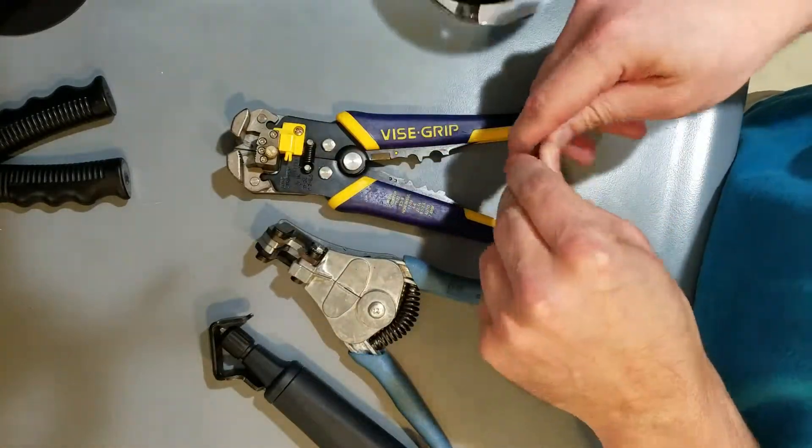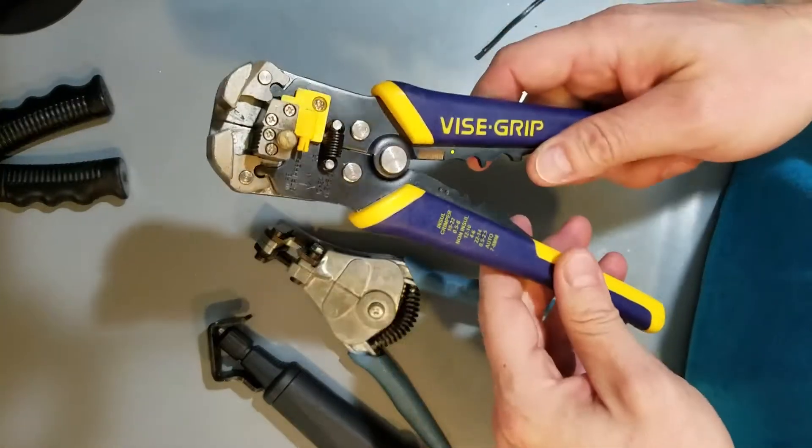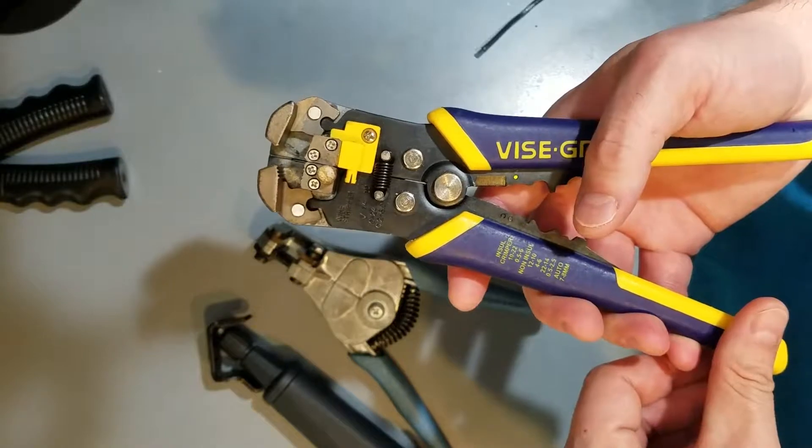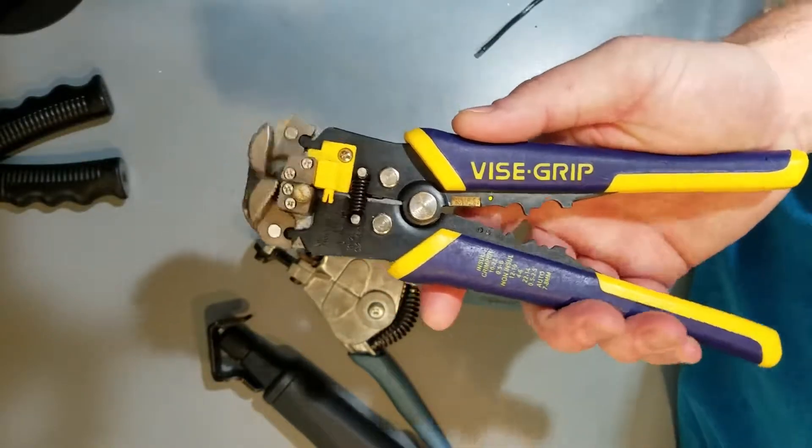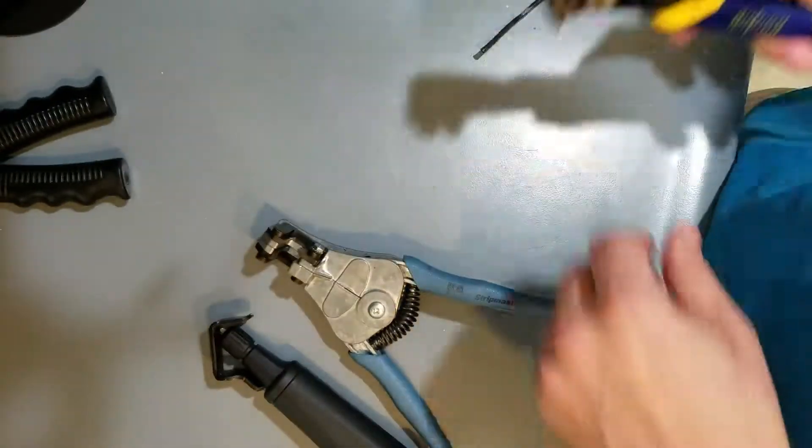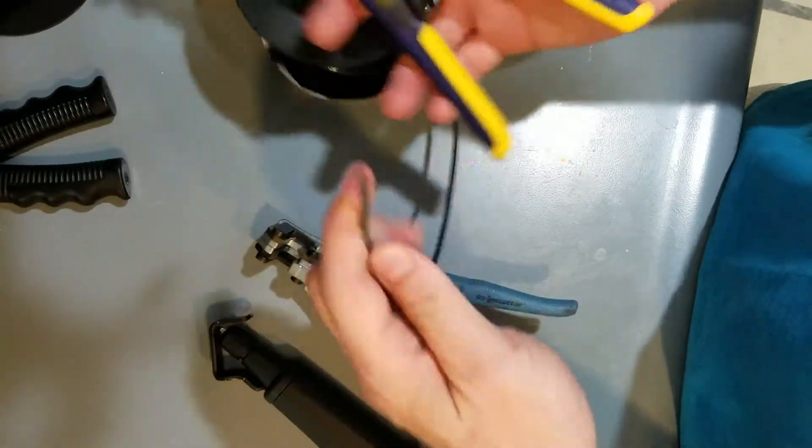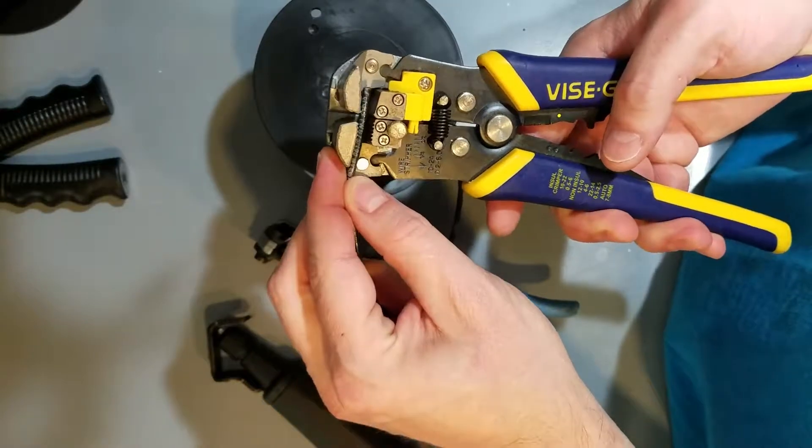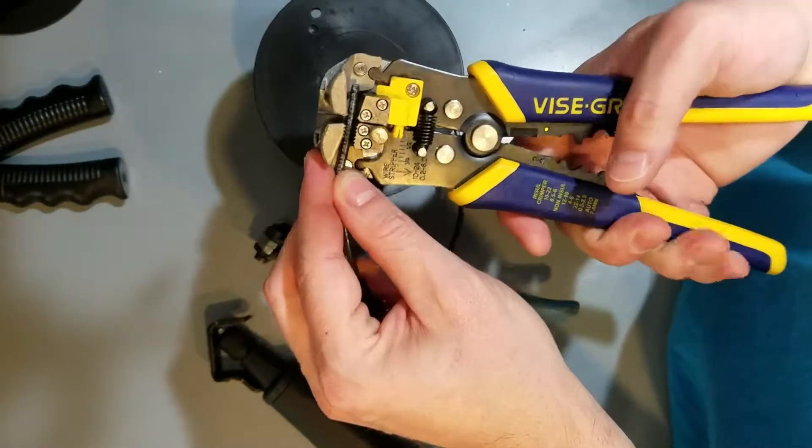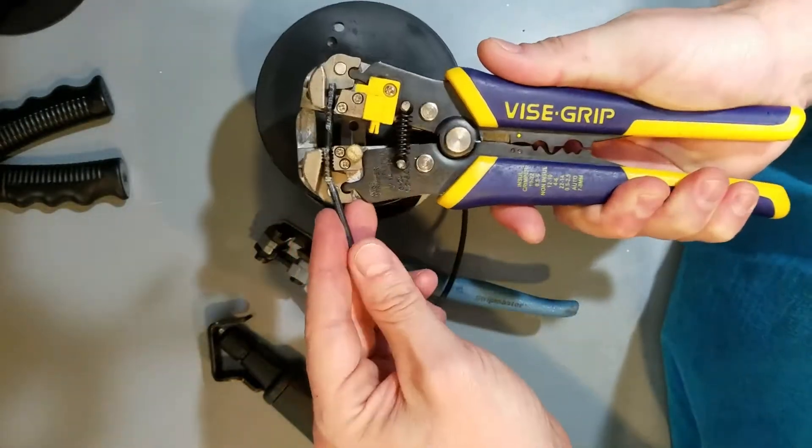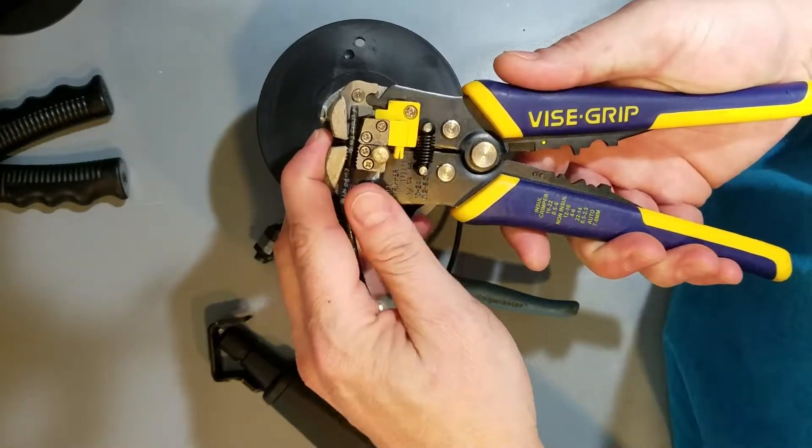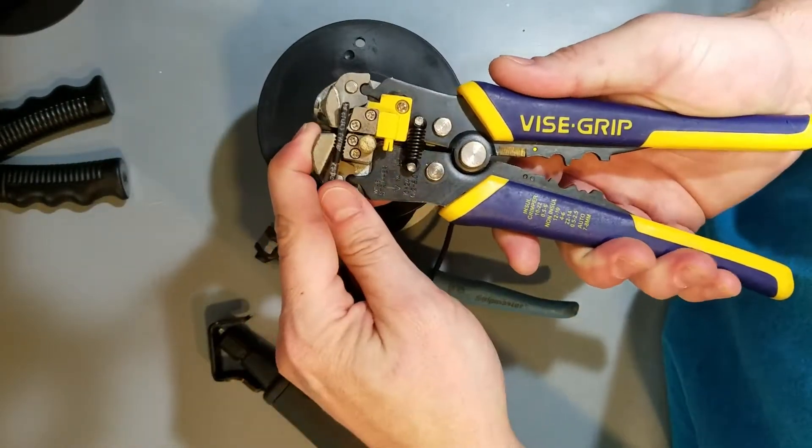But I've got some more options here. This is an Irwin Vise-Grip. It's got a one-handed stripper. So basically all you need to do—you don't need to hold the other end of your wire with pliers or anything. Just one hand, though they don't really like to play nice sometimes. You've got to hold down on one end.